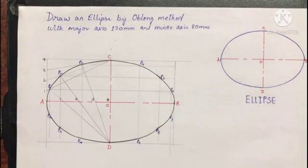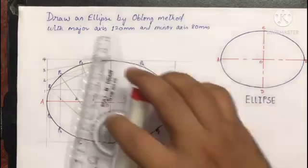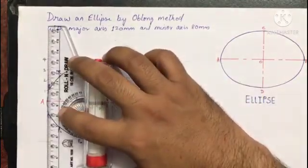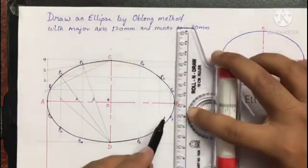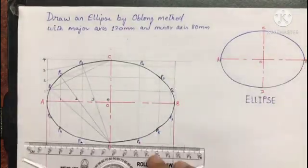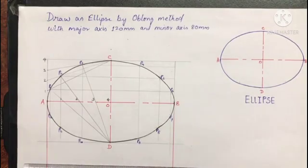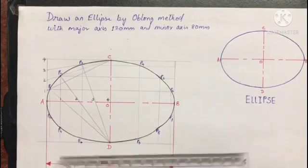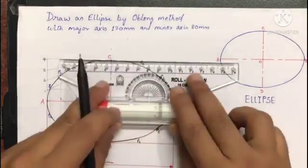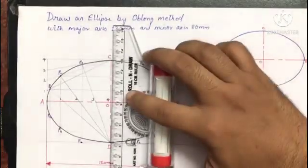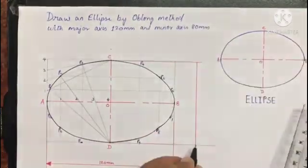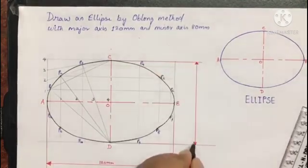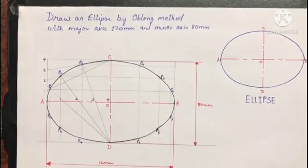So this is how we complete an ellipse. Now we need to give dimensions. We just have two dimensions: major axis and minor axis. So this is how we complete the drawing.